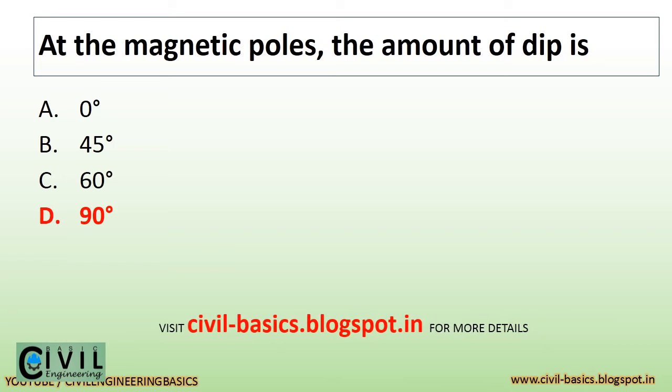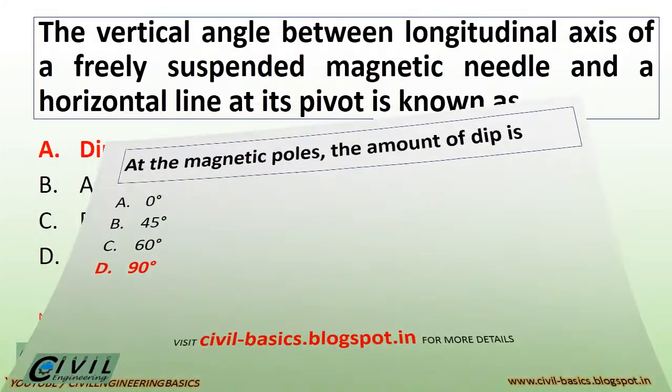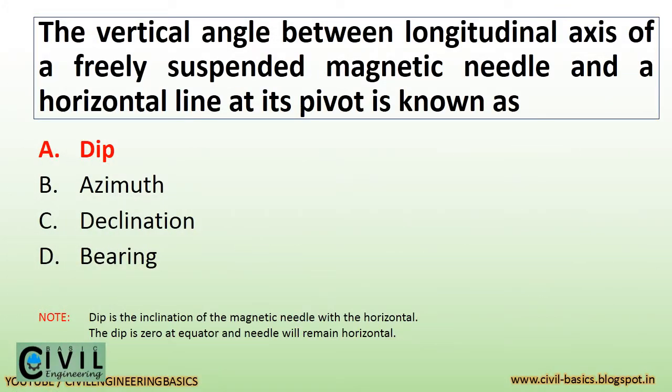At the magnetic poles, the amount of dip is 90 degrees. The vertical angle between the longitudinal axis of a freely suspended magnetic needle and a horizontal line at its pivot is known as dip. Note: dip is the inclination of the magnetic needle with the horizontal. The dip is zero at the equator and the needle will remain horizontal.